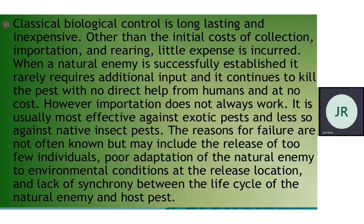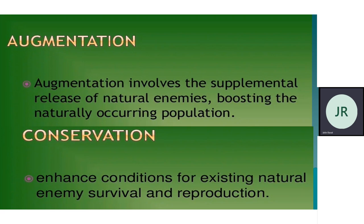Importation does not always work — it is usually most effective against some pests. Where it works, you don't have to constantly control it; it is automated, as the pest itself is its food and they find it on their own. Augmentation involves the supplemental release of natural enemies, boosting the naturally occurring population by periodic or supplemental release. Conservation involves enhancing conditions for existing natural enemy survival and reproduction.